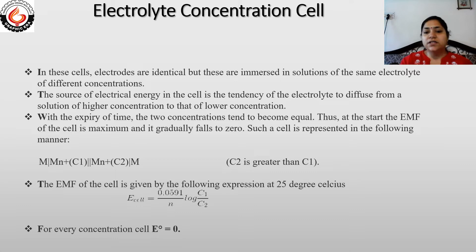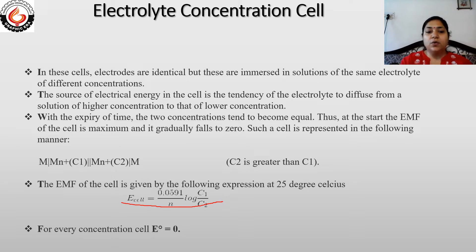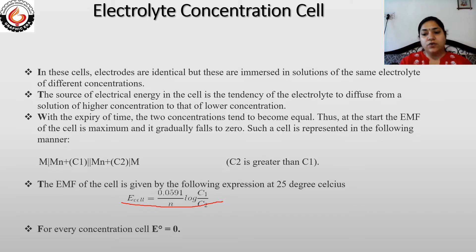Here C2 is greater than C1. The EMF of the cell is given by the following expression at 25°C. This expression is the same as the Nernst equation, with the only difference that E⁰ is not present. The reason is that E⁰ equals zero because both electrodes are the same — both are having the same standard electrode potential — so when we calculate the E⁰ value, it becomes zero.